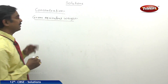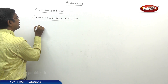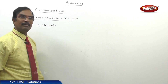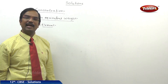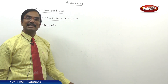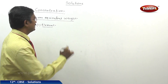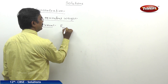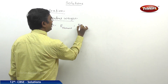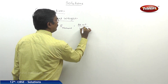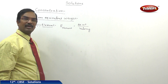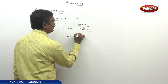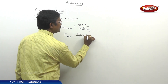In order to understand this concept, suppose if I take an element. For an element, the Gram Equivalent Weight is nothing but the atomic weight of the element divided by its valency. For example, the equivalent weight of sodium is: atomic weight is 23, valency is 1, so it is 23.